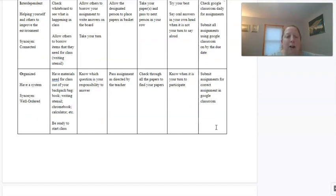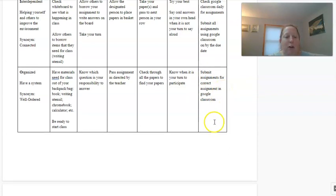Organized, have a system. So have the materials you need for class out of your backpack or bag before class starts. Your book, you don't need to really carry that. But when we're taking notes to have your outline out, to have your periodic table out, most times you won't need your Chromebook, but sometimes you'll need a calculator and just kind of in general, be ready to start class when the bell rings. And then submit your assignments for the correct assignment in Google Classroom. Just pay attention and make sure you're submitting things correctly in Google Classroom.